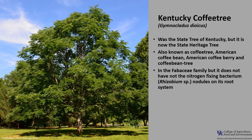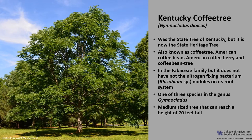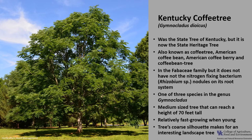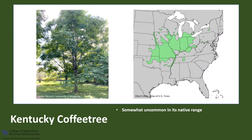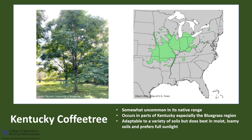Kentucky coffee tree is a medium-sized tree that can reach a height of about 70 feet tall. It's relatively fast growing when young, and then the growth rate slows as the tree ages. Its coarse silhouette makes for an interesting landscape tree. It is somewhat uncommon in its native range of the central states, with pockets from Pennsylvania to Nebraska and from Minnesota to Oklahoma. It occurs in parts of Kentucky, typically on limestone soils, especially the bluegrass region. It is adaptable to a variety of soils but does best in moist, loamy soils and prefers full sunlight. It does tolerate urban pollution and is quite drought tolerant.